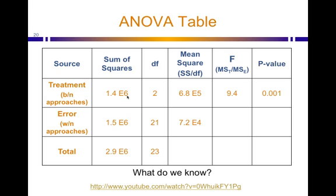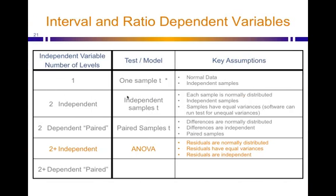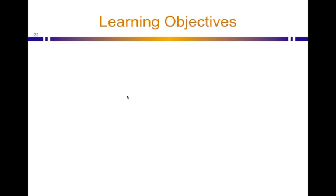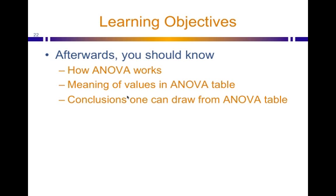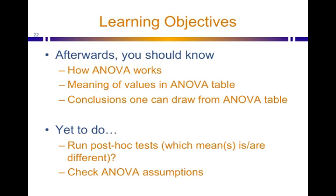To figure out which ones are different from each other, that's covered in another video on post-hoc tests like Tukey's method. What we covered today is how ANOVA works, the meaning of the values in the ANOVA table, and an understanding of the conclusions one can draw from an ANOVA table. What remains is learning how to run post-hoc tests to identify which mean or means differ from the rest, and how to check the assumptions of ANOVA.